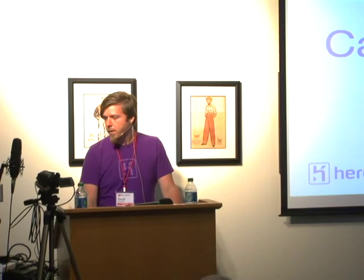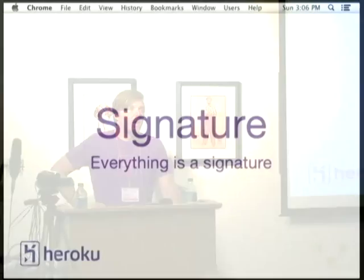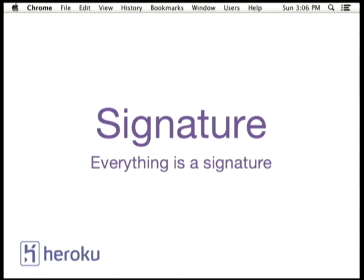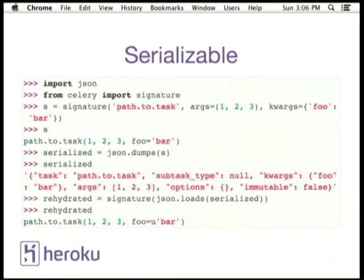Now let's get to the actual building blocks for Canvas itself. The most fundamental building block of the Celery Canvas tools is the signature. It's important to remember that everything in the Celery Canvas module is based off of signature. So, what is a signature? A signature is simply a serializable representation of a task. It is a subclass of a dictionary, and so it contains the import path for the task itself, any arguments and keyword arguments that are needed to be passed to that task, and other options. You can JSON-dump a signature, load it back in, pass it to the signature constructor to rehydrate it — this is basically how task serialization works in general.